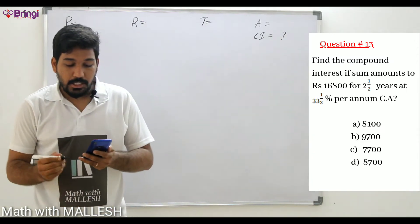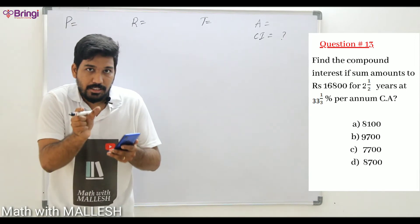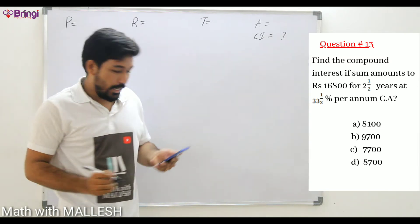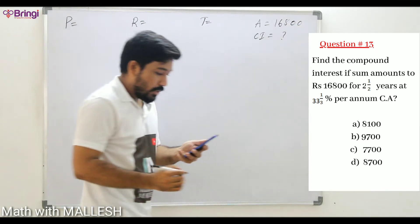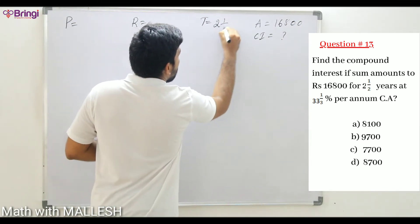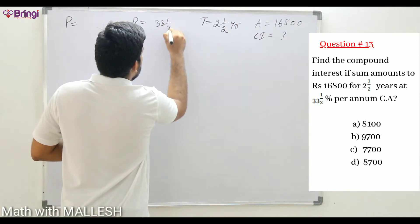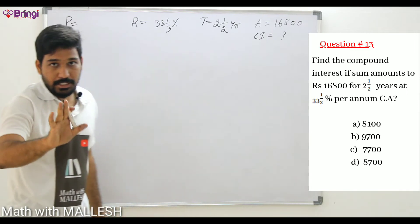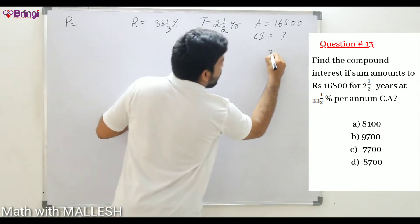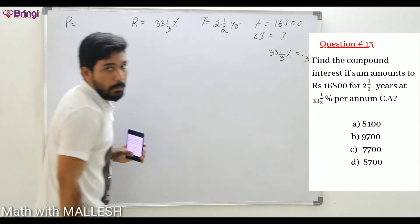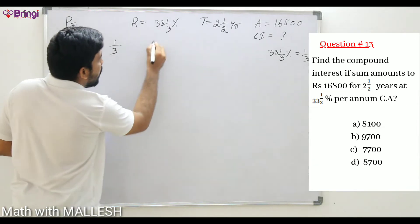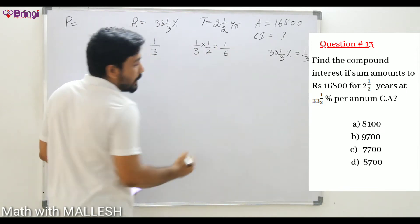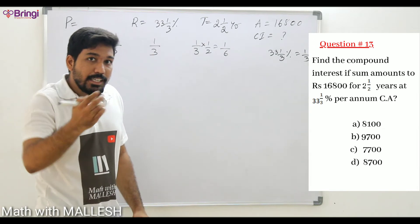Question number 13: Find the compound interest if sum amounts to 16800 — 'sum amounts to' means the principal became 16800 — for 2½ years at the rate of 33⅓ percentage per annum compounded annually. Our question mark is compound interest. 33⅓% = 1/3. For the first year: 1/3; for the second year: 1/3; and for the third half year: 1/3 × 1/2 = 1/6.